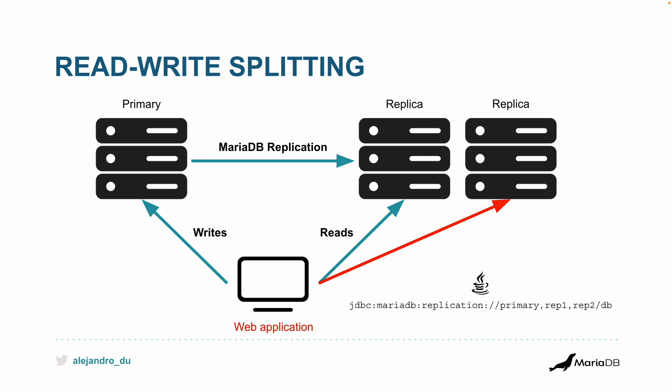In the case of Java, you can use a connection string that does the load balancing for you — just specify a replication connection string with the IP addresses of the primary, replica one, replica two, and the JDBC connector for Java handles the load balancing automatically.